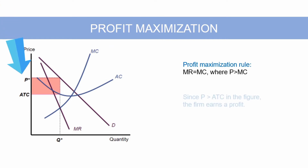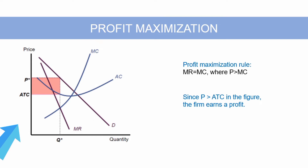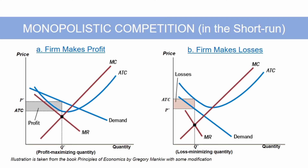Since price is above ATC as shown in the graph, the firm earns a profit, equal to the shaded rectangle in the figure. In panel A, price exceeds average total costs, so the firm makes a profit. When firms are making profits, new firms have an incentive to enter the market.